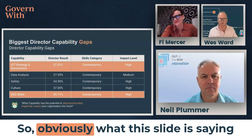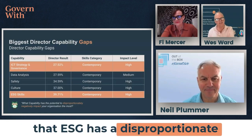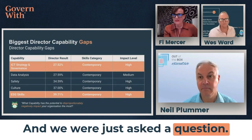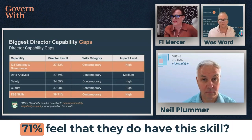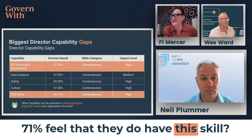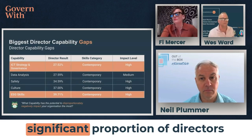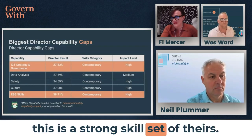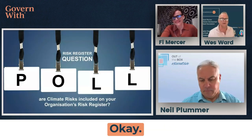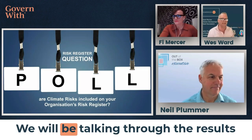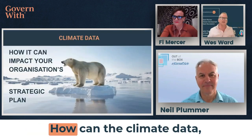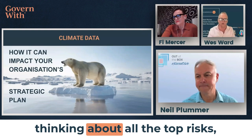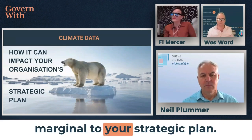So ESG has a disproportionate impact across all the risks we are assessing. A question came in asking: does this mean 39.71% feel they do have this skill? Yes, that's what it means. It means a significant proportion of directors don't feel comfortable that ESG is a strong skill set of theirs. Quick poll: how is climate data going to impact your organisation's strategic plan? As a director, you've got to start thinking about all the top risks, whether they're disproportionate or marginal to your strategic plan.